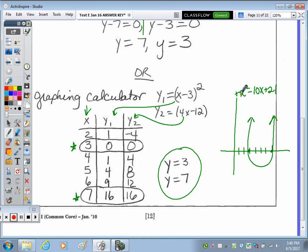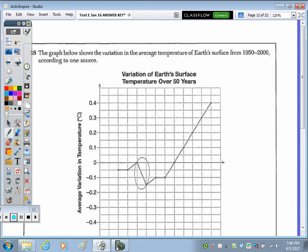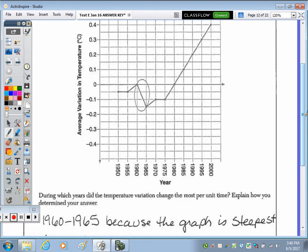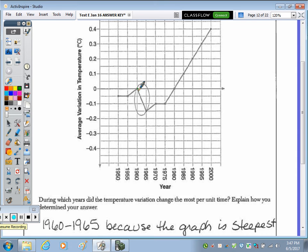Number 28. The graph below shows the variation in the average temperature of the Earth's surface from 1950 to 2000 according to one source. During which years the temperature variation changed the most per unit of time? Explain how you obtained your answer. So in looking at it in terms of the greatest rate of change or in which the years the temperature changed the most, we're looking for the steepest slope.